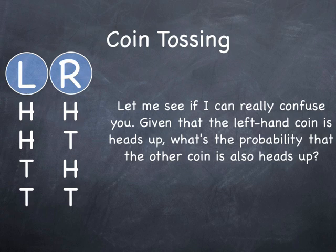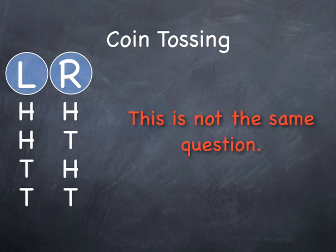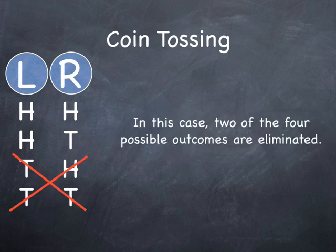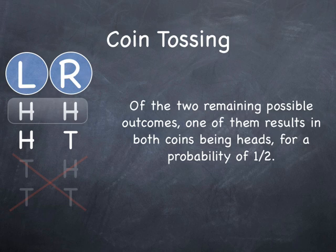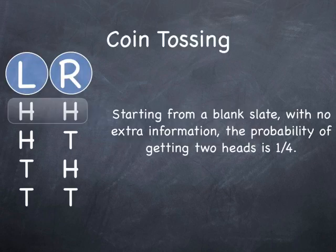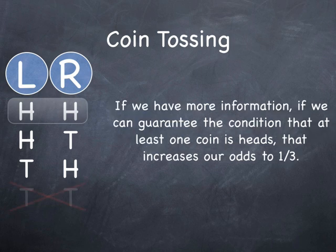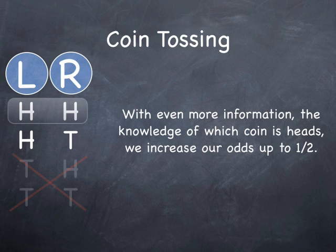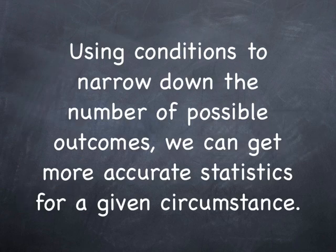Let me see if I can really confuse you. Given that the left-hand coin is heads up, what's the probability that the other coin is also heads up? Be careful — this is not the same question. In this case, two of the four possible outcomes are eliminated. Of the two remaining possible outcomes, one of them results in both coins being heads, for a probability of 1 half. So starting with no information: 1 fourth. Knowing at least one coin is heads: 1 third. Knowing specifically which coin is heads: 1 half. Using conditions to narrow down the number of possible outcomes, we can get more accurate statistics for a given circumstance.